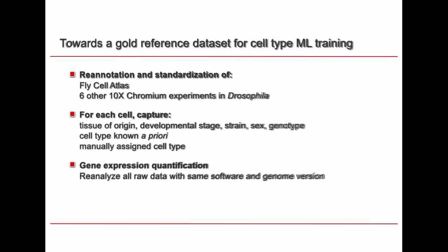The first step is to build a gold reference dataset in order to train and evaluate the model. For that, we re-annotated and standardized several Drosophila experiments — we used the Fly Cell Atlas and six other 10x Chromium experiments. For each cell, we captured information about the tissue of origin, developmental stage, strain, sex, and genotype. We also captured cell types known a priori, if any, and the manually assigned cell types. This can be tricky because as we want to re-analyze the data afterwards, we need to link the barcodes to each cell type, and this information can be very difficult to find — sometimes it's not even provided.